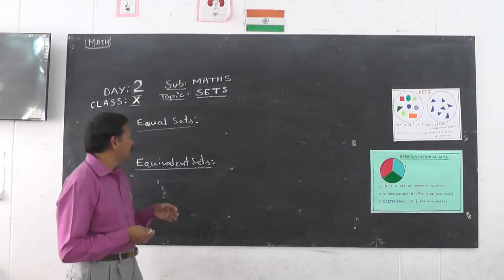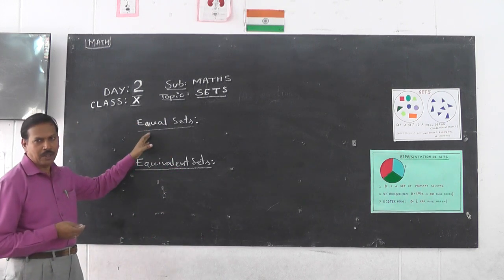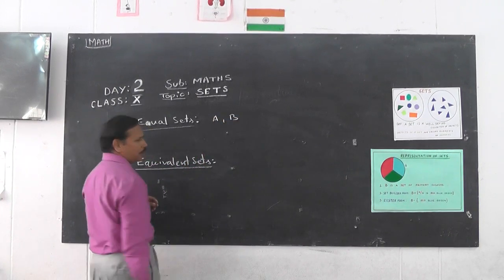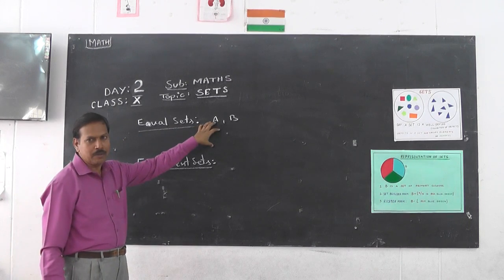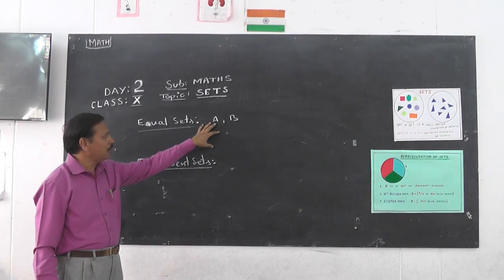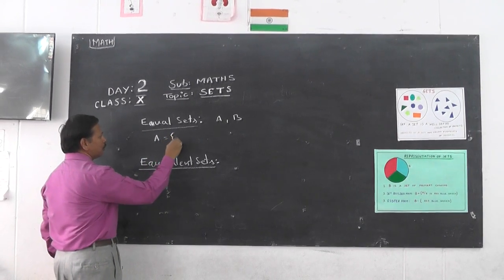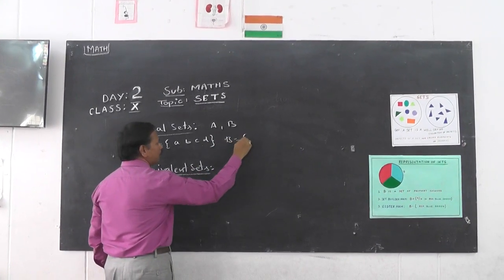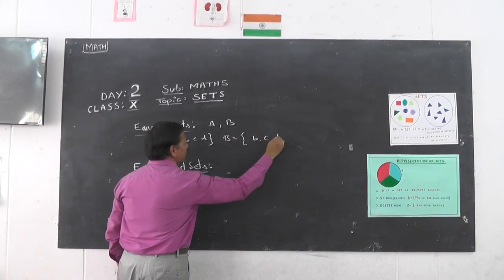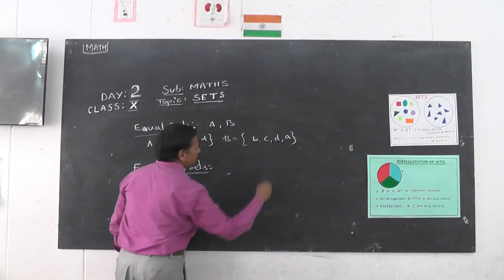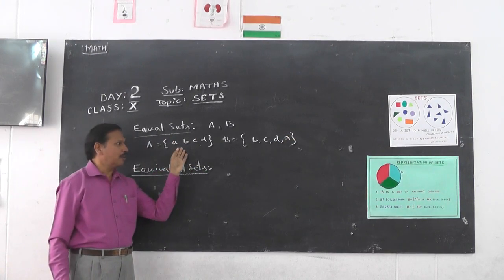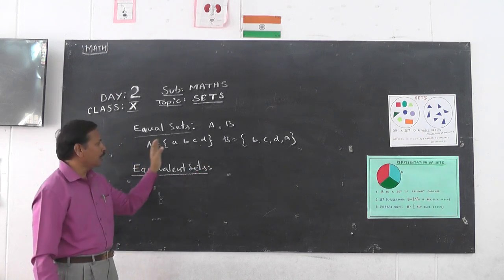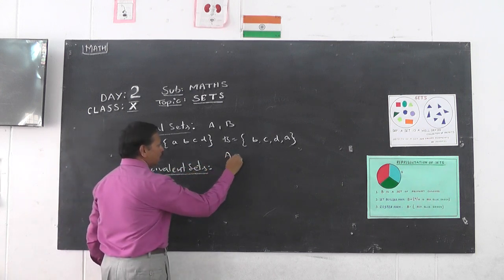We will start with equal sets. What are equal sets? Suppose set A and B are two sets that have equal number of elements and equal elements, then the two sets are called equal sets. For example, set A = {A, B, C} and set B = {B, C, B, A}. Here in set A and set B the elements are the same, so we say A is equal to B, denoted as A = B.